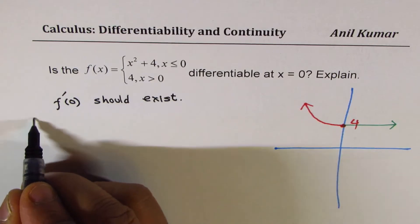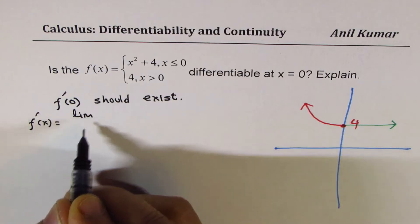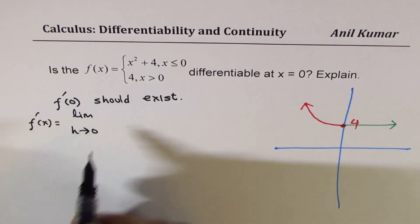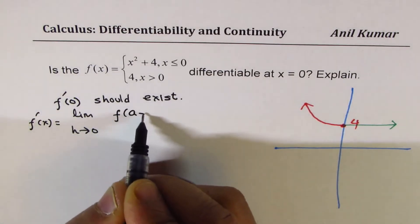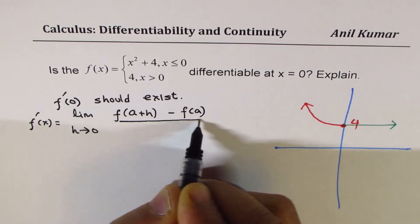With the definition, we know f'(x) is equal to the limit as h approaches 0 of [f(a + h) - f(a)] / h. So that is the fundamental definition for finding the derivative at a particular point.